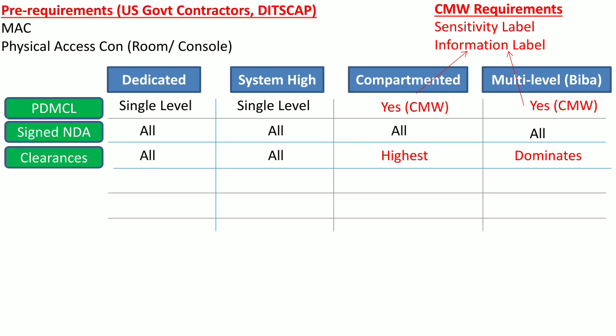The next attribute is security clearances. Users should have security clearance to access all the data processed by the information system when it operates in dedicated or system-high security modes. In compartmented security mode, the user should have the highest classification label of the data processed by the system. In multi-level security mode, the user's clearance level should dominate the classification label of the object.